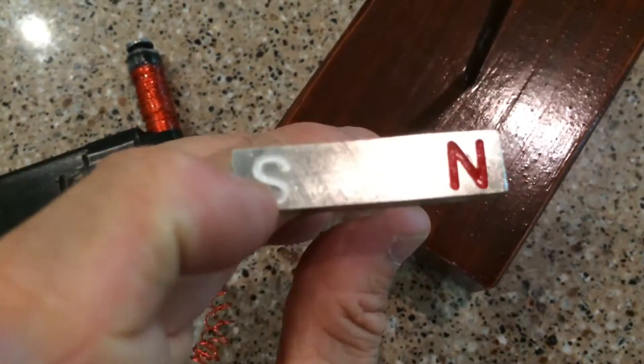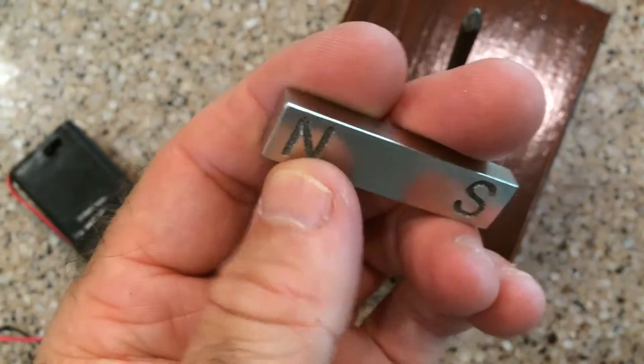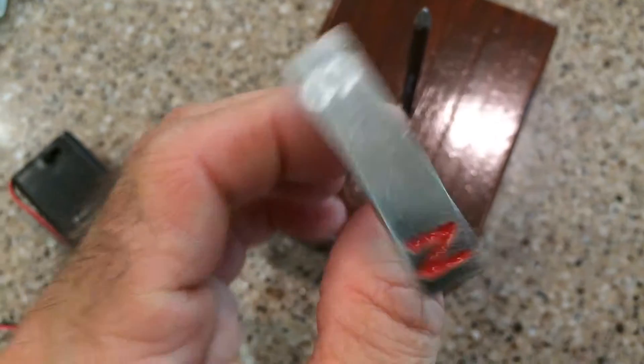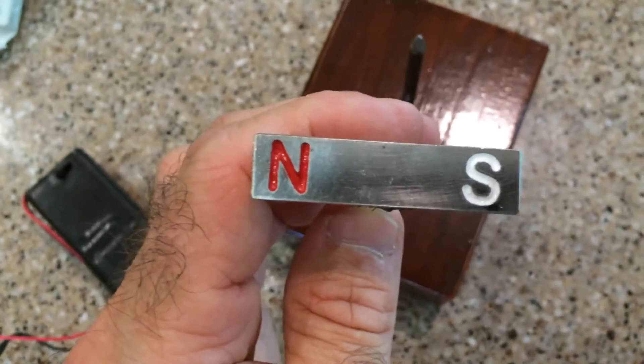The magnet has these little etchings in it. Let me show you another one. Here's one by itself, a brand new one. They have these little etched-in areas here, north and south, and I filled those in with some acrylic paints. No, not acrylic. They're oil-based.